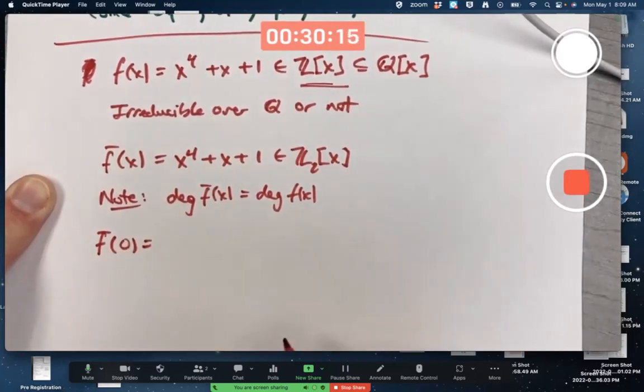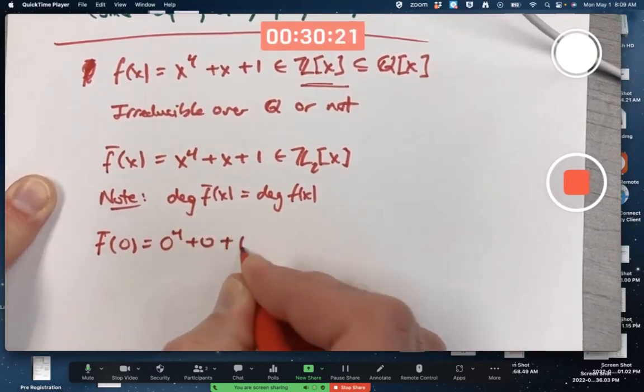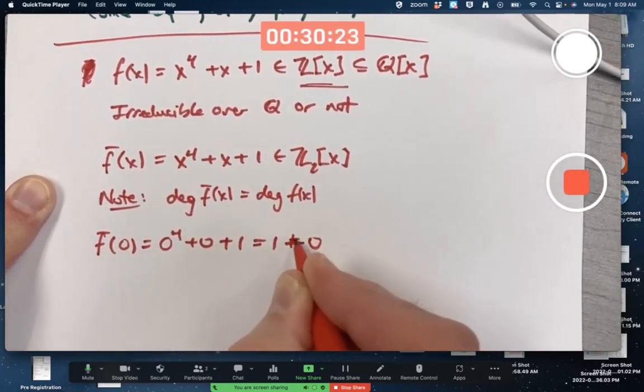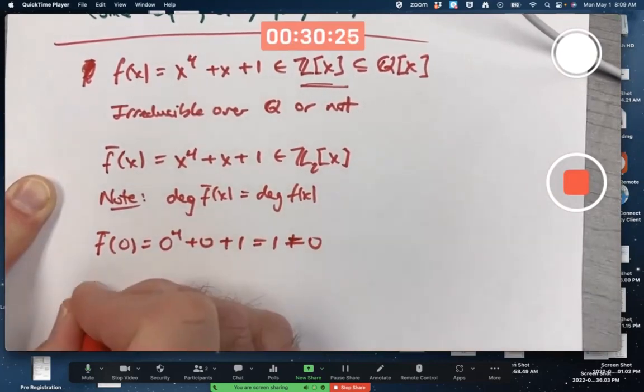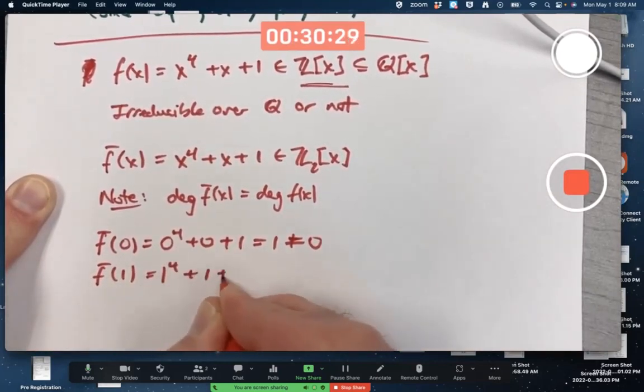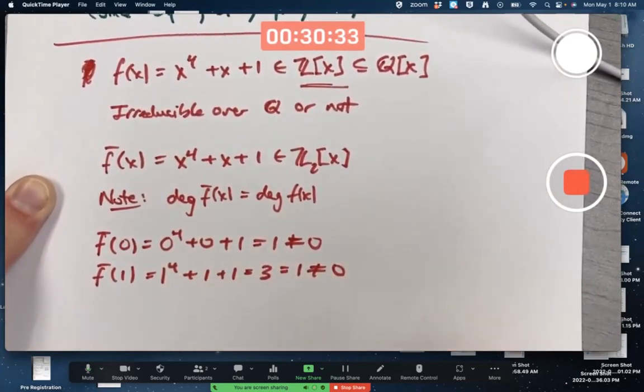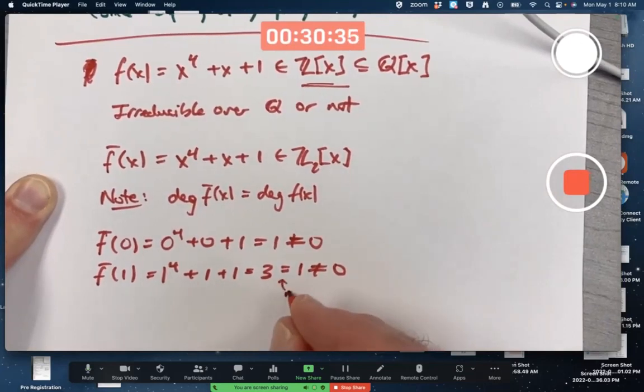It's easy to show it's got no linear factors because it's got no zeros in Z_2. There's only two numbers to check, 0 and 1.